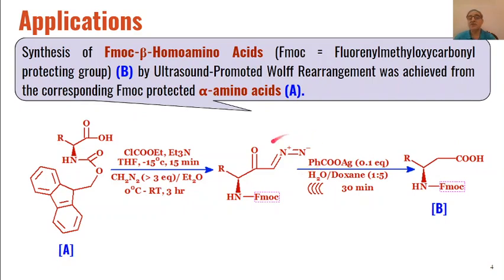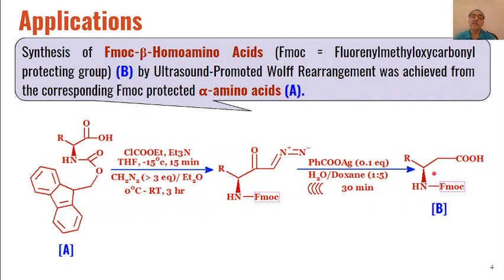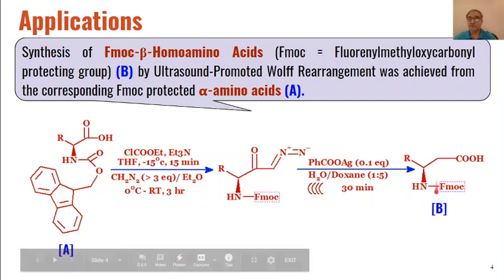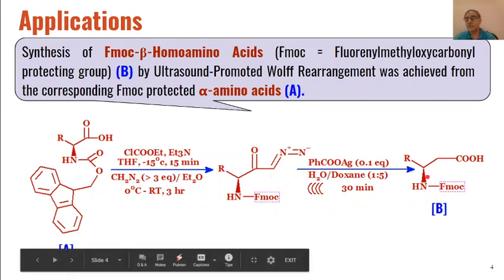The mechanism is the same as seen previously. First, these diazo compounds on reaction with silver salts are converted into ketenes, and then these ketenes react with water to give the corresponding carboxylic acids as product. Overall, beta amino acids are converted into alpha amino acids through this reaction, and from this step the Wolff rearrangement takes place.